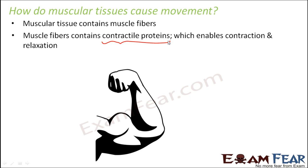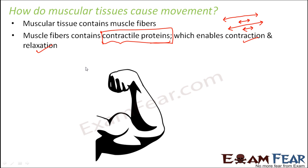Anything which contracts will also relax. Like when you stretch a rubber band and release it, it contracts; stretch it again, it expands; release it again, it contracts. So if something is contracting, it will also relax. The same thing happens with muscle fibers — they can contract and relax due to the presence of these contractile proteins. That is why this property of contraction is seen in muscles but not in bones or cartilage, because they do not have this special type of protein. In this way, contractile proteins play a very important role behind our movements.